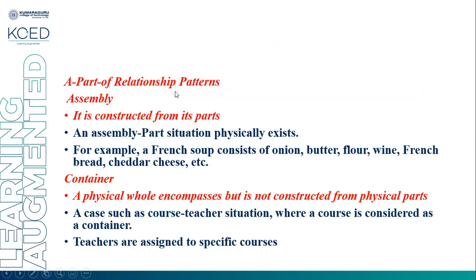The part-of relationship has three patterns. The first pattern is assembly: the whole is constructed from its parts, and the assembly-part situation physically exists. For example, a French soup consisting of onion, butter, flour, wine, French bread, and cheddar cheese.